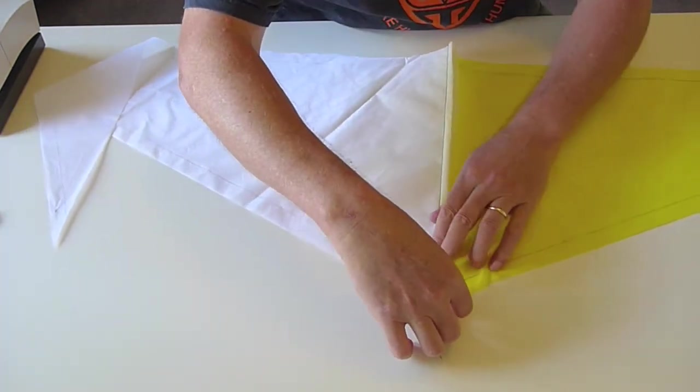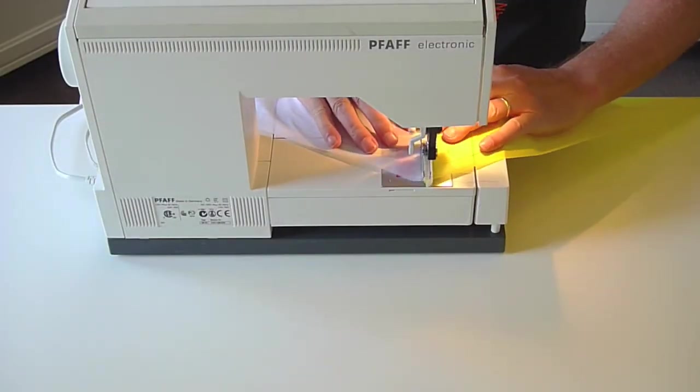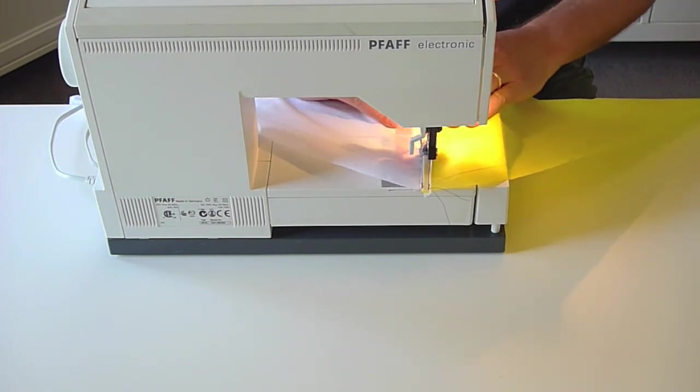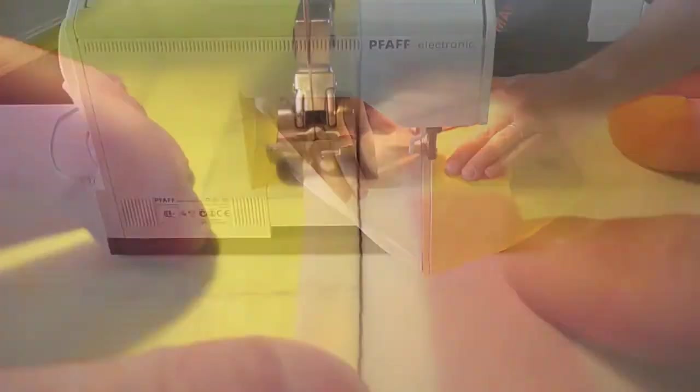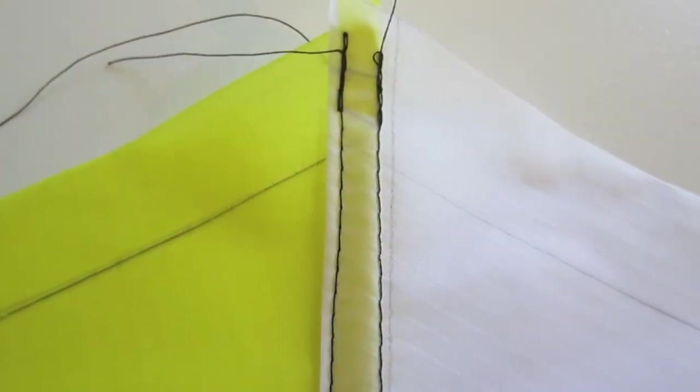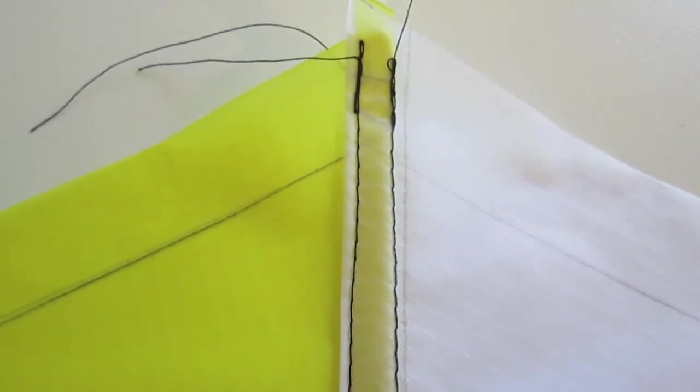And that's called a flat fell seam and that hides the raw edges. Would be better if the sewing was straight too.